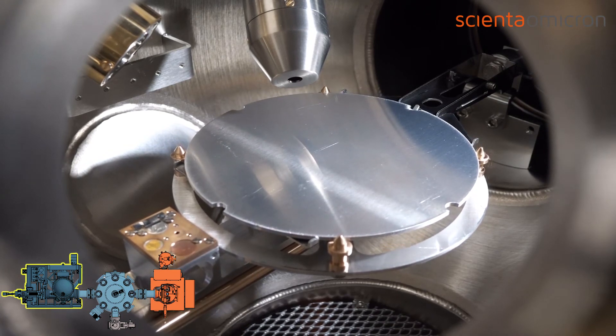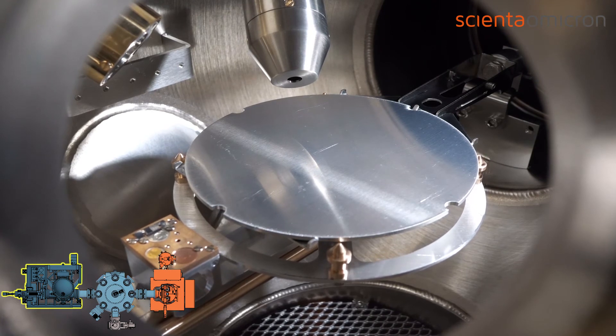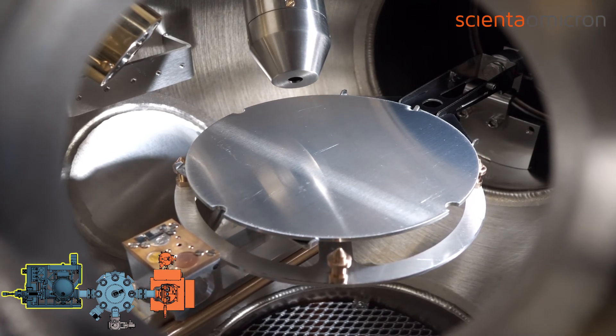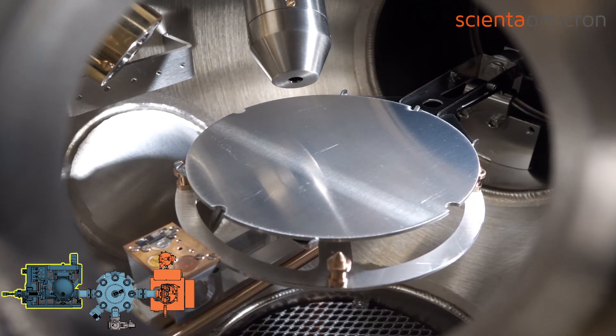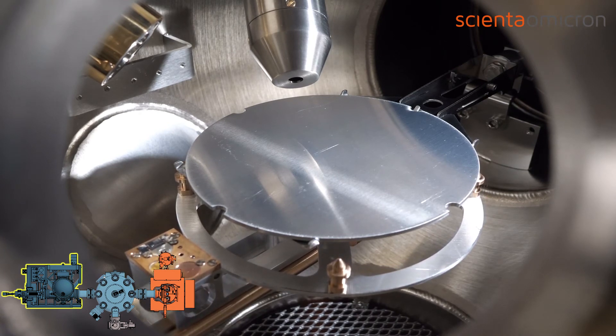As soon as the wafer fork is positioned below the sample in the transfer position, the XPS manipulator is lowered until the wafer holder is placed on the fork acceptor, and safe retraction of the arm is enabled. The arm then retracts back into the radial distribution chamber.